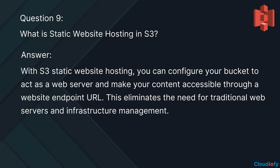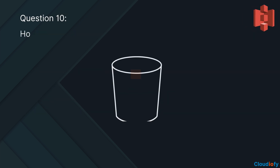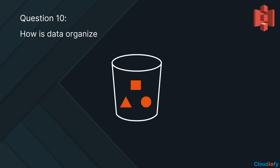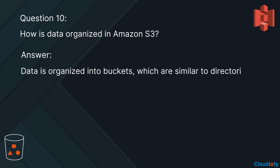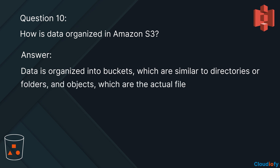The last question is: how is data organized in Amazon S3? Data is organized into buckets, which are similar to directories or folders, and objects, which are the actual files you store in those buckets.